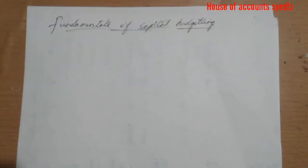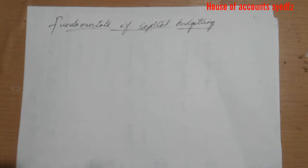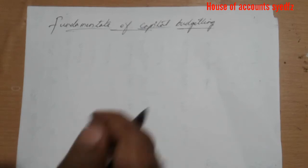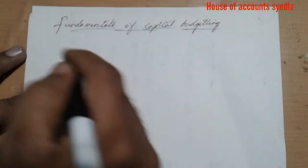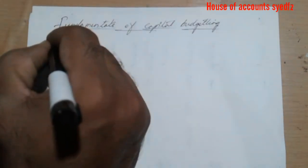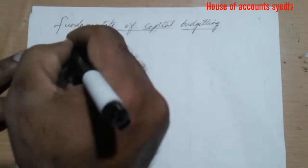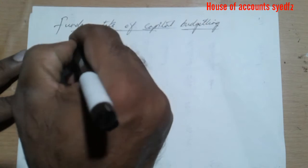In this video we are going to see the chapter of fundamentals of capital budgeting. This chapter belongs to the investment process. Let's write the formulas. The first formula belongs to payback period.